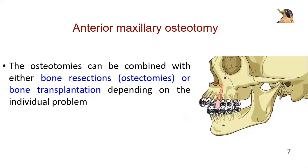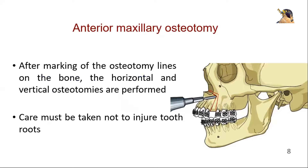The osteotomies can be combined with either bone resection (ostectomy) or bone transplantation (bone grafting), depending on the individual problem. After marking of the osteotomy lines on the bone, the horizontal and vertical osteotomies are performed.